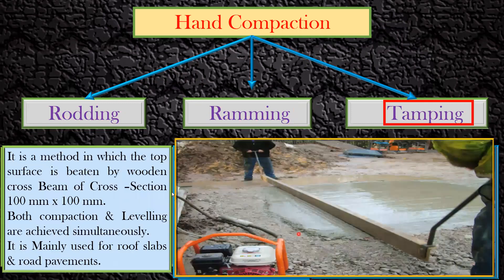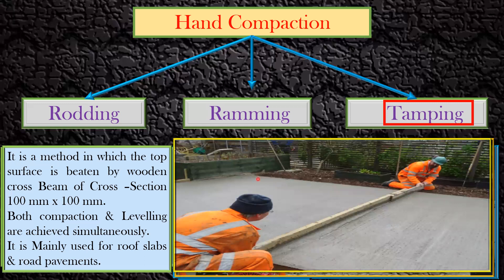The last hand compaction method is tamping. In this method, the top surface is beaten by a wooden cross beam of section 100 mm by 100 mm. Both compaction and leveling are achieved simultaneously. It is mainly used for roof slabs and road pavement. The beam is typically 6 to 8 mm thick steel. You can see the concrete is placed, compaction is done, and leveling is achieved at the same time.